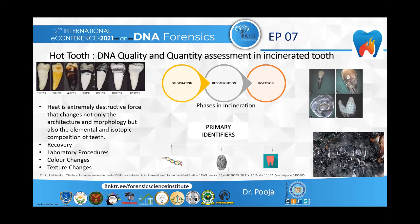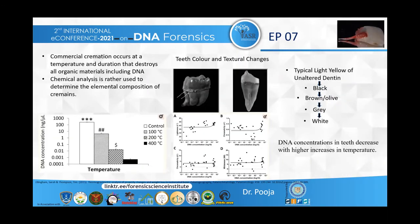The procedure begins with recording the radiographic, photographic, and chemical data. Colour changes range from lower to higher temperatures, as we see in the next slide, and texture changes range from a flaky appearance to a husky appearance.